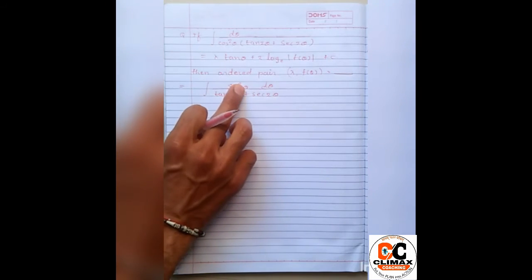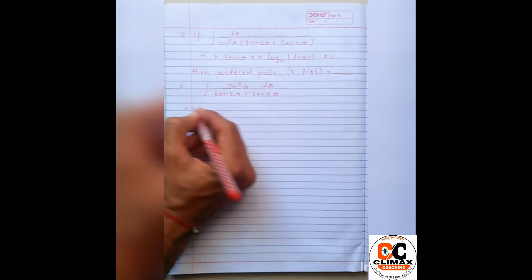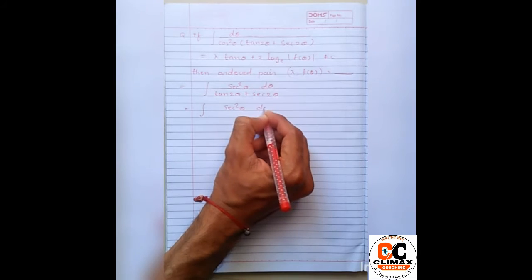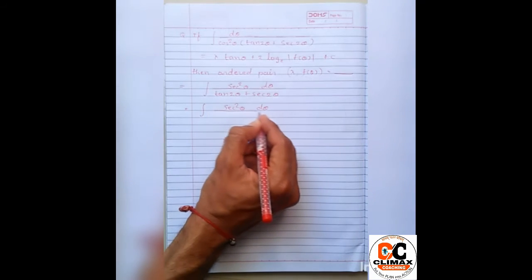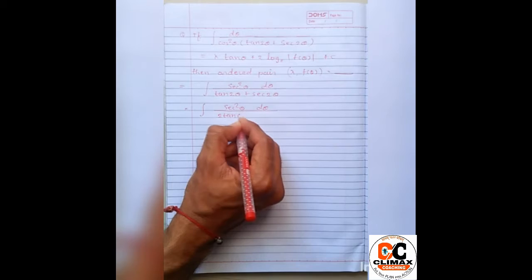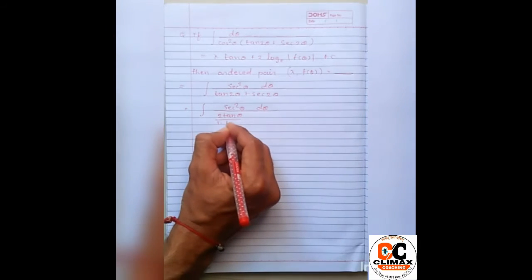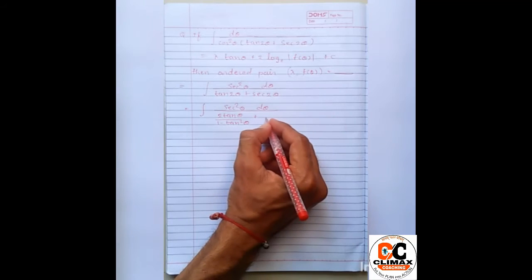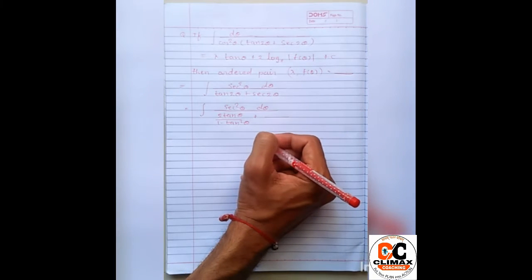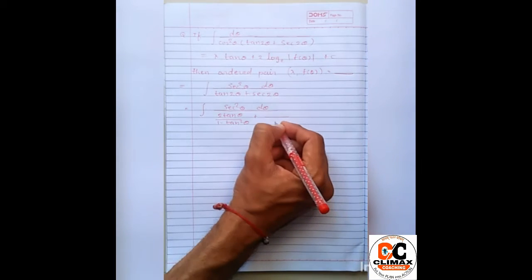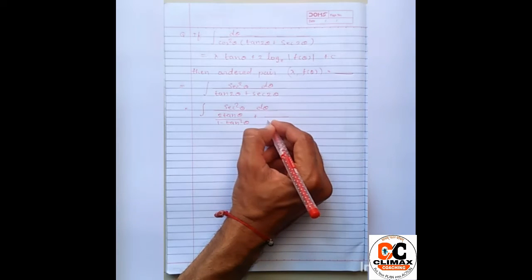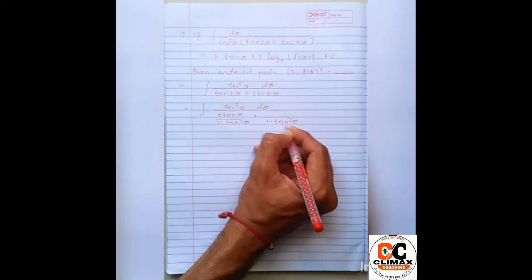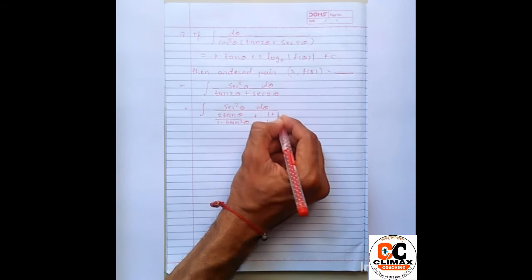as it is, tan 2 theta ki identity hoti hai 2 tan theta divide by 1 minus tan square theta plus sec 2 theta it means 1 over cos 2 theta aur cos 2 theta yahan pe hai aur uski identity hoti hai 1 minus tan square theta divide by 1 plus tan square theta wo yahan pe aa jaega.